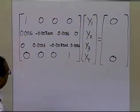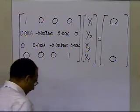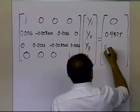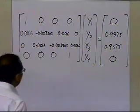So that's what I get as my four equations, four unknowns. The right-hand side here is 0.9375, and 0.9375 here.